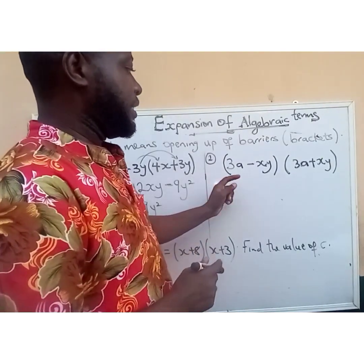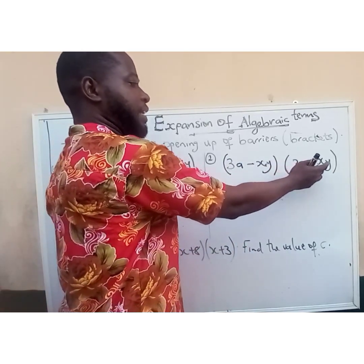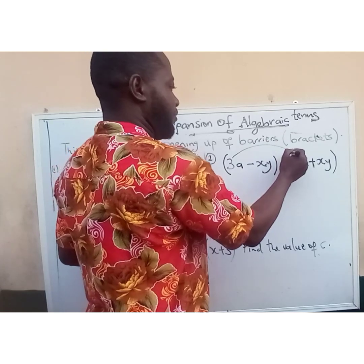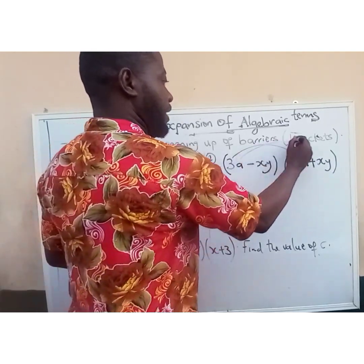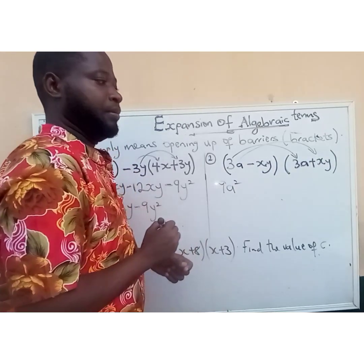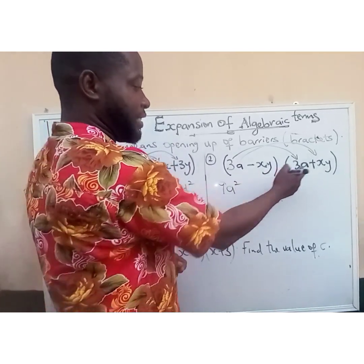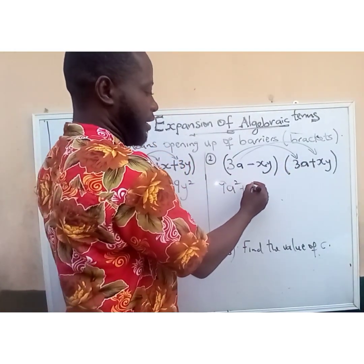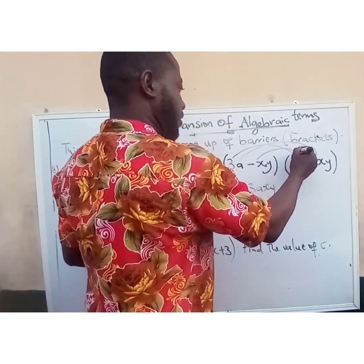The second question says: open bracket 3a minus xy close bracket, open bracket 3a plus xy close bracket. We want to expand this. We pick the first term 3a and use it to multiply everything in the second bracket. 3a multiplied by 3a gives 9a squared. Then 3a multiplied by xy: both signs are positive, so we get plus 3axy.